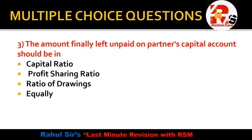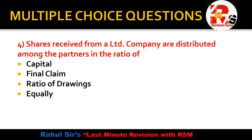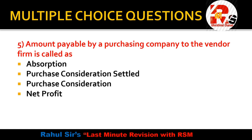The amount finally left unpaid on a partner's capital account should be in: capital ratio, profit sharing ratio, ratio of drawings, or equally. This is from the piecemeal distribution chapter. We prepare a statement of excess capital and a statement showing distribution of cash. Profit or loss on realization is shared in the profit sharing ratio. Shares received from a limited company are distributed among partners in the final claim ratio.